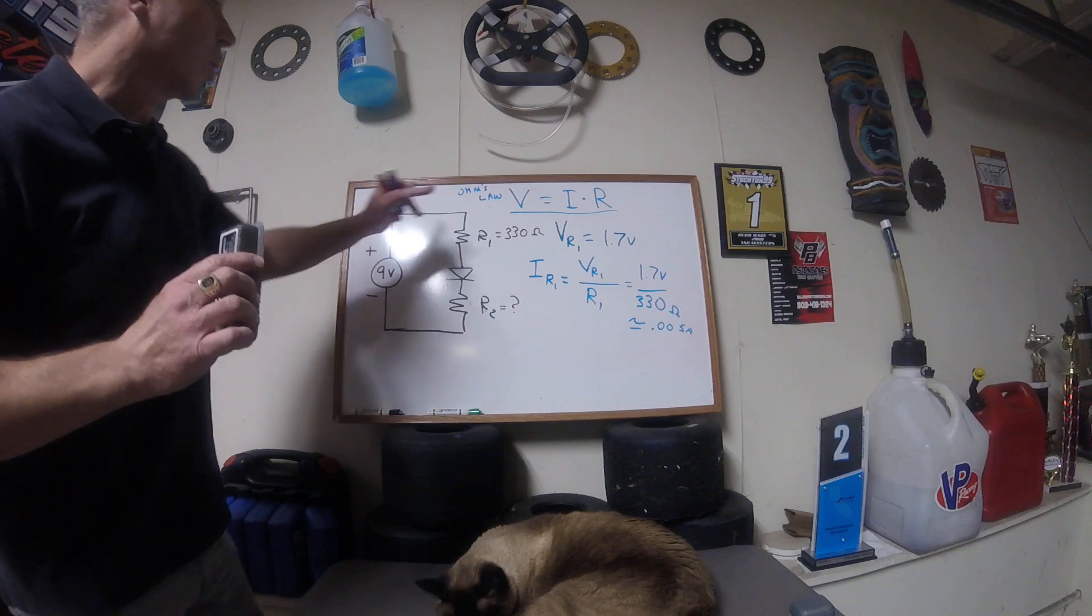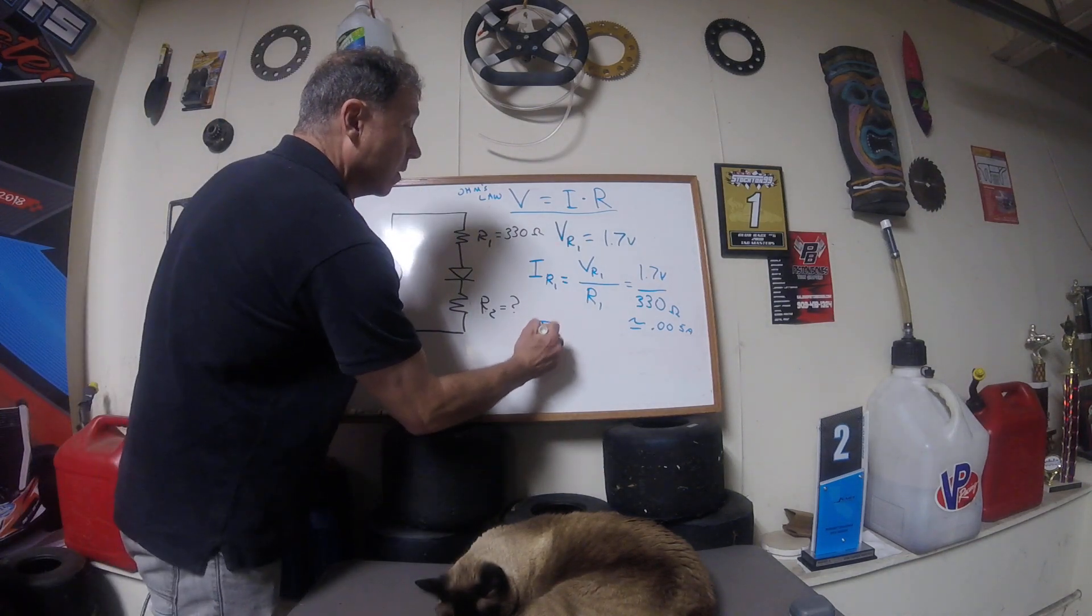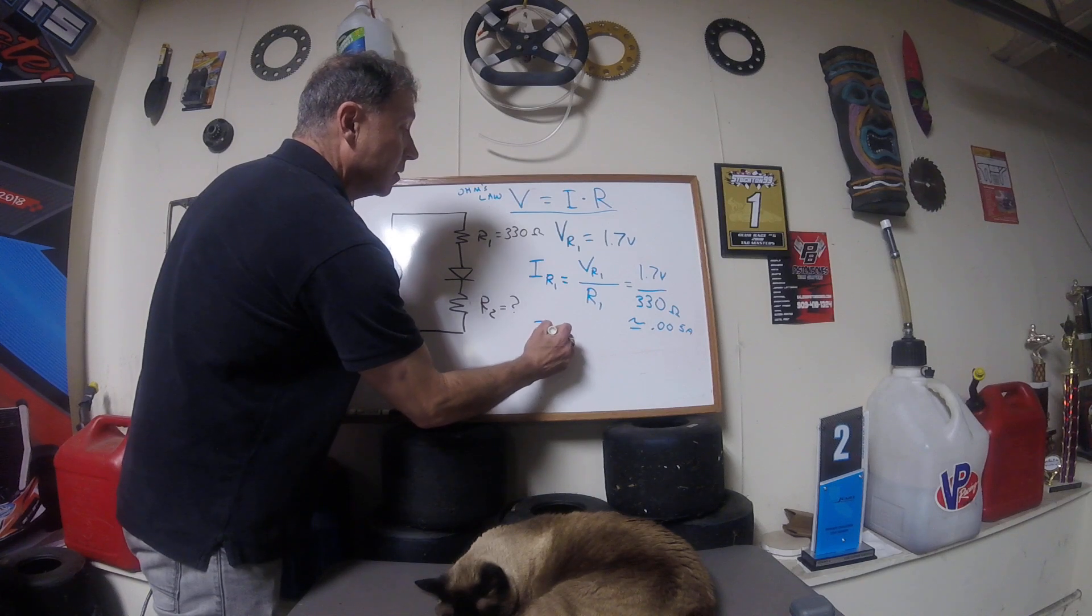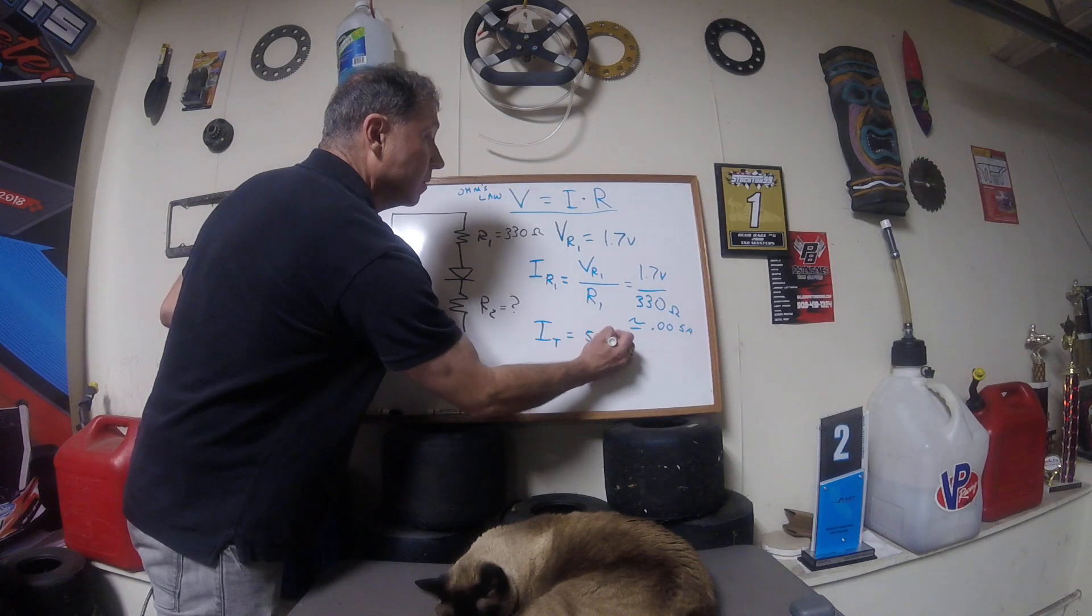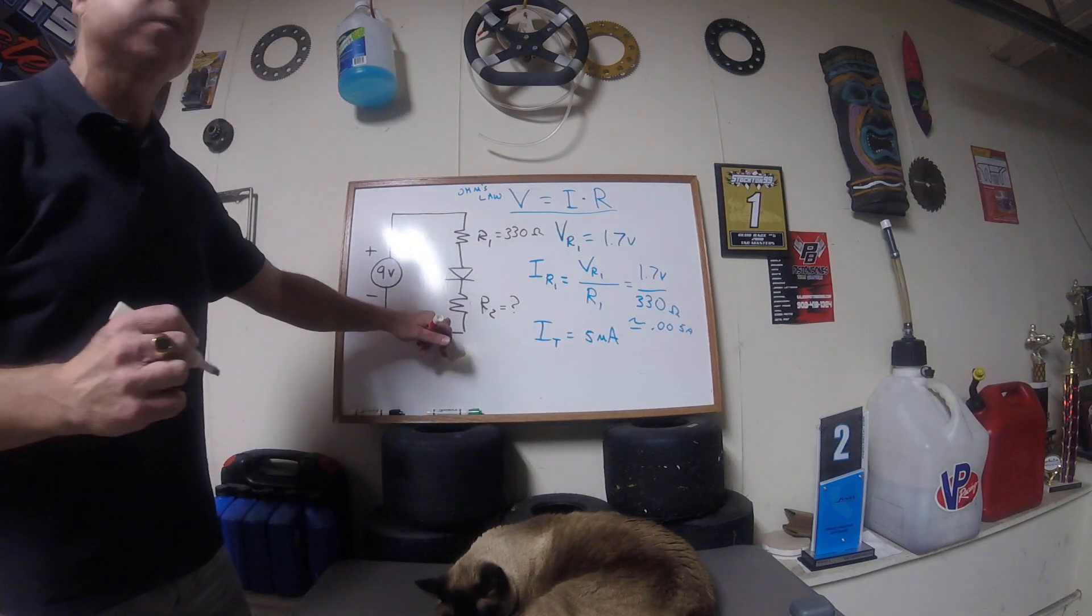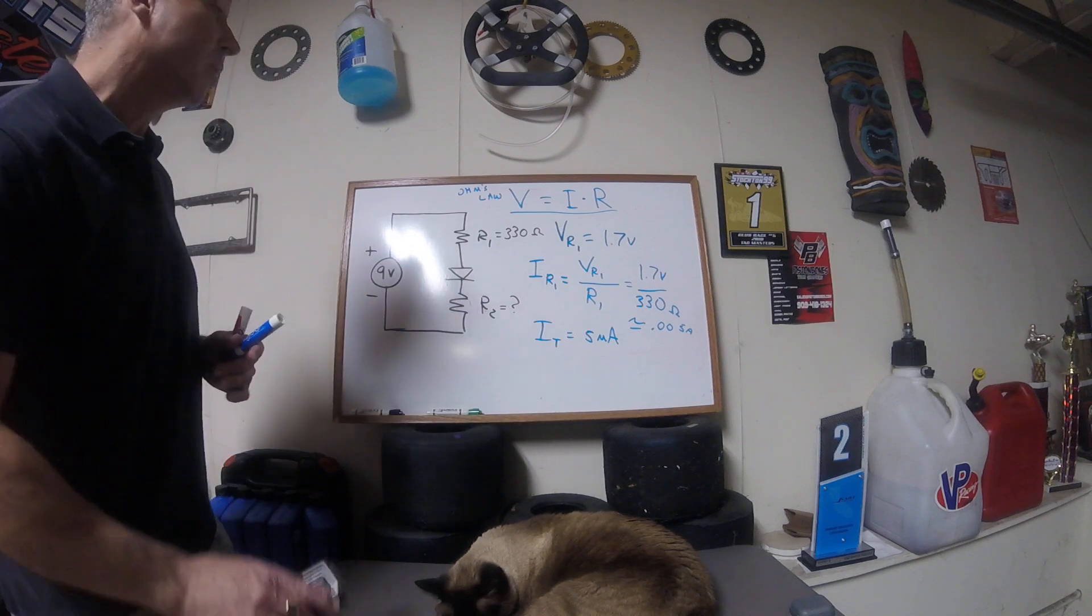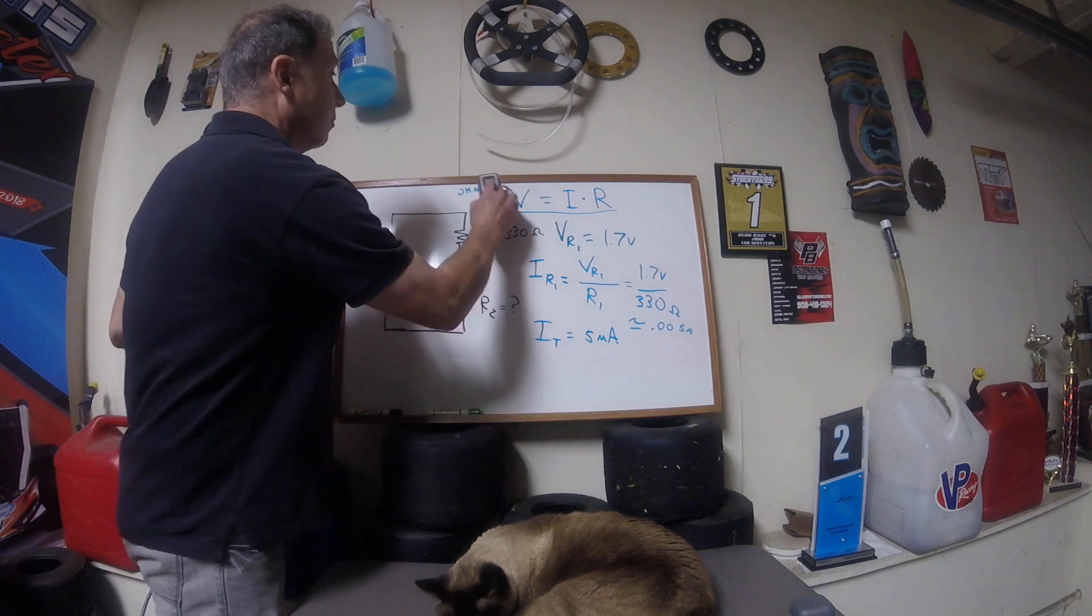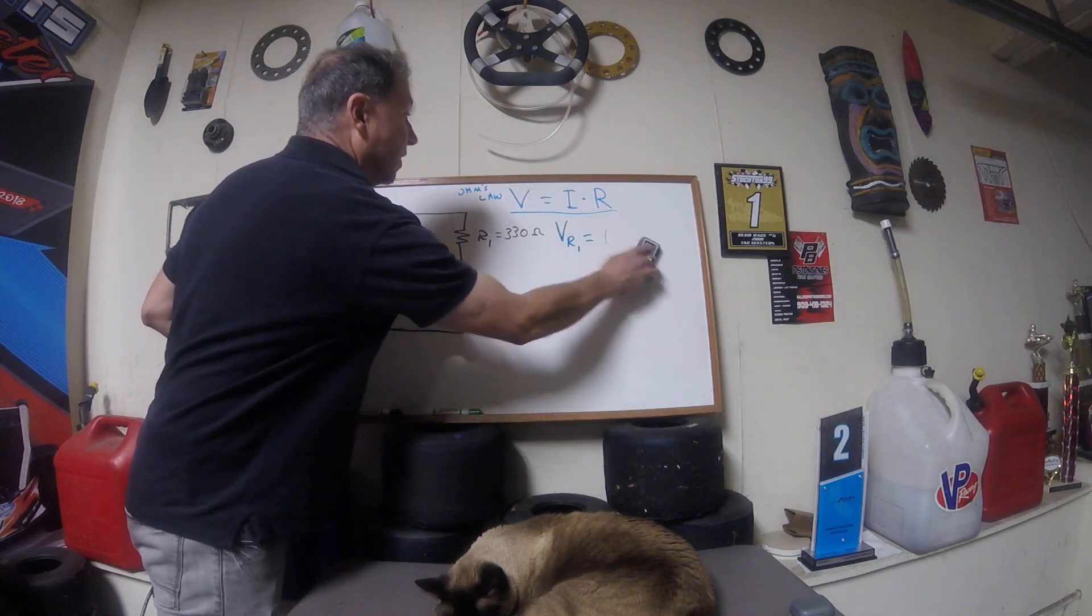So now that we have the current flow through here, this I through R1 is our IT, so our total series current, and so we're talking about 5 milliamps. And now we're going to move on to the unknown resistor. So we erase that, remember our current is 5 milliamps. Don't know what that resistance is yet.